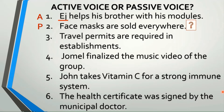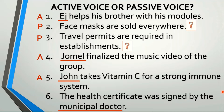Number three: travel permits are required in establishments. Who requires travel permits? Not known. We do not know the doer, so it's passive voice. Number four: Jomel finalized the music video of the group. Who is the doer? Jomel — used as the subject at the beginning, so it's active voice. Number five: John takes vitamin C for a strong immune system. Who takes vitamin C? John, used as the subject — active voice. And the last one: the health certificate was signed by the municipal doctor. Who signed the health certificate? The municipal doctor — at the end, used as the object of the preposition. So, we have passive voice.